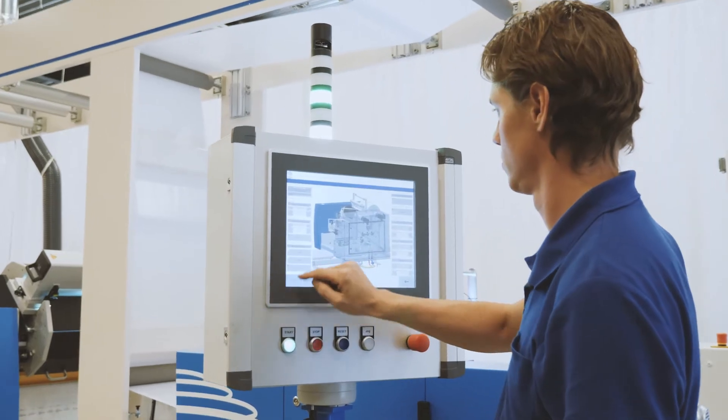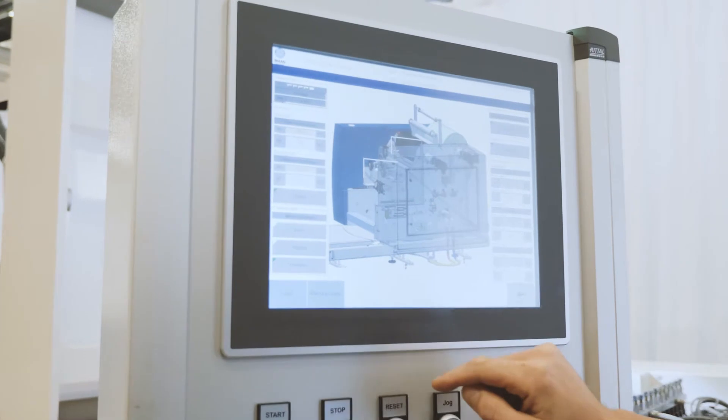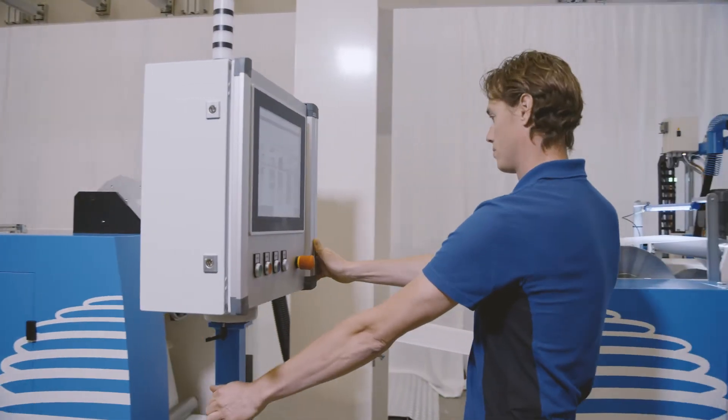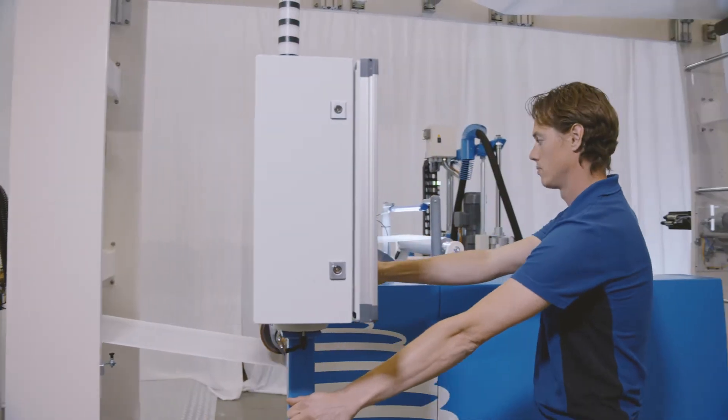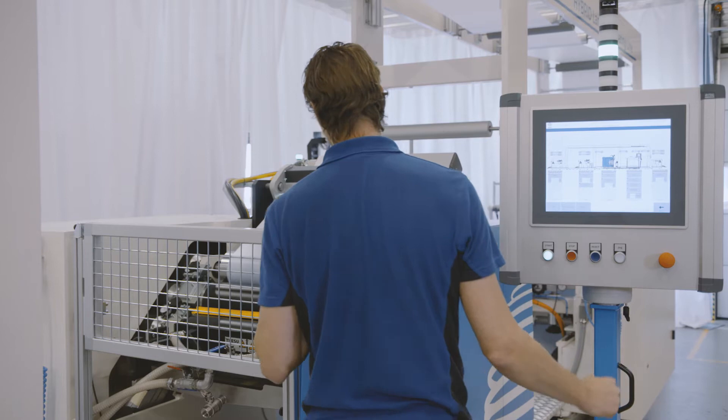The coating lines are controlled by a central operating system with a graphic interface. This system is mounted on a rail, so you can use it in any position alongside the line. The nominal production speed of this coating line is 80 to 150 meters per minute.